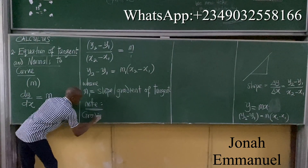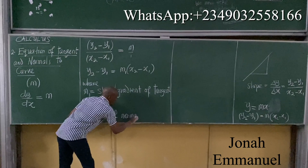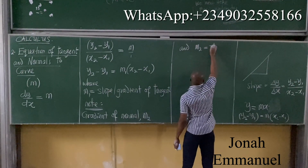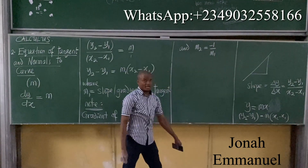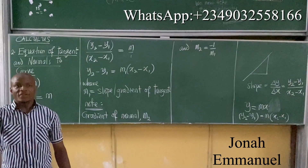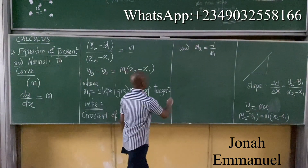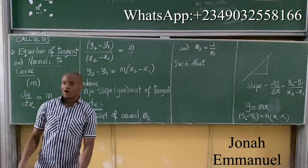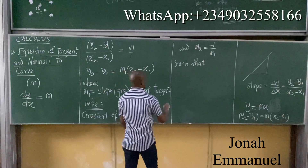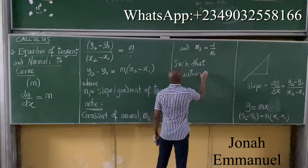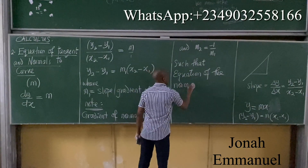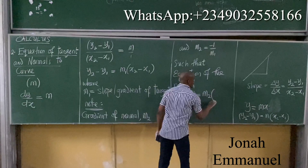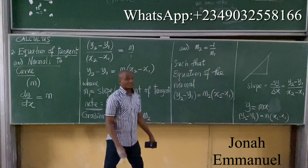The gradient of the normal is M2, and M2 is the negative inverse of M1. Please don't forget: M2 equals the negative inverse of M1, such that the equation of the normal is given by Y2 minus Y1 equals M2 times (X2 minus X1). So they are similar.